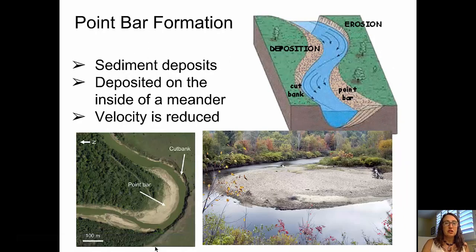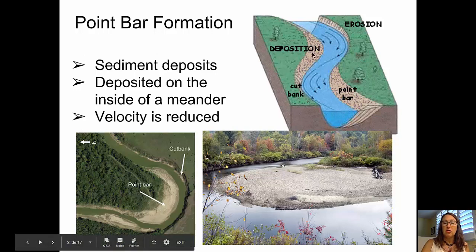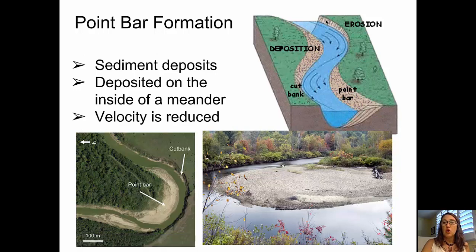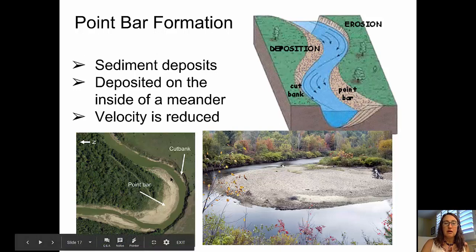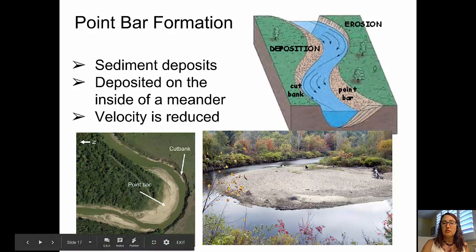The opposite case is point bar formation. Point bars are deposits on the inside of a meander where the velocity is reduced. Deposition of a point bar on the inside increases the meander itself. So the erosion on the outside increases the size of the meander in that direction, and the deposition on the inside of the point bar increases that curve in the stream. In the aerial photo, you can see the point bar being deposited and the cut bank, and in the photo on the right, an actual sediment deposit point bar.